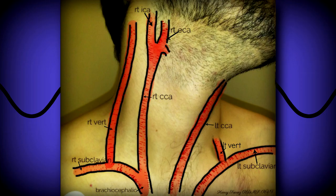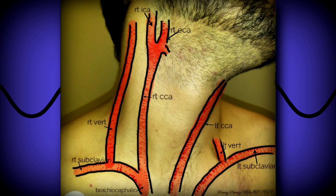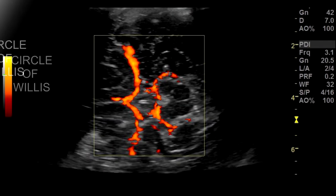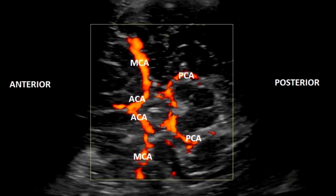The common carotid arteries further bifurcate into internal and external carotid arteries at the carotid bulb, which feed the brain and the face respectively. The vertebral arteries arise from the subclavian artery and traverse cephalad through the transverse foramina of the cervical vertebrae C1 through C6, entering the brain through the posterior fossa. The confluence of all these vessels forms the circle of Willis, a circular anastomotic arterial network at the base of the brain.